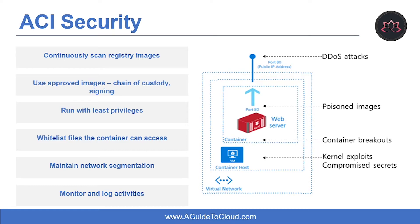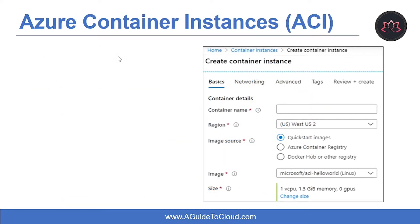Scanning for and identifying vulnerabilities is a continuous process. Let's learn about what is Azure Container Instances or ACI. Azure Container Instances is a fast service for scenarios that can operate in isolated containers, including simple applications, task automation, and build jobs. For scenarios where you need full container orchestration, including service discovery across multiple containers, automatic scaling, and coordinated application upgrades, Microsoft recommends Azure Kubernetes Service.